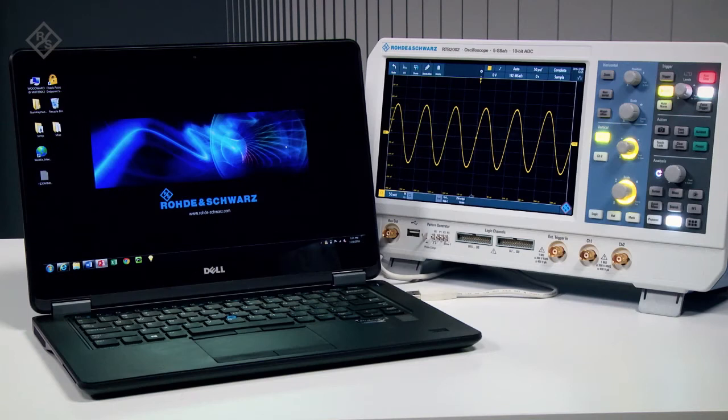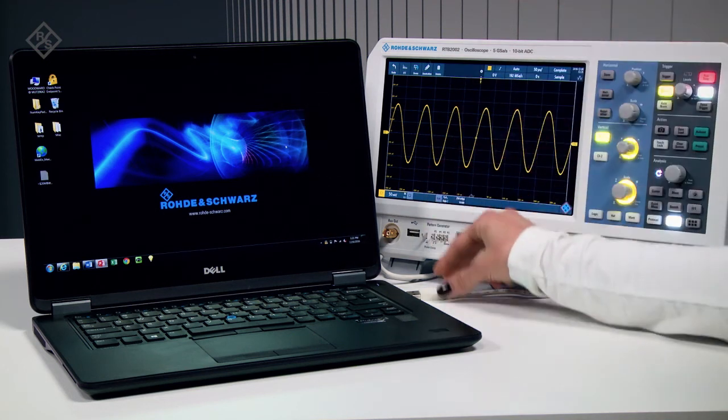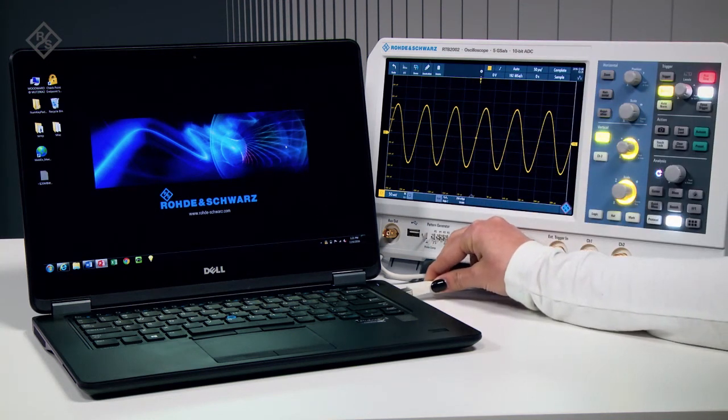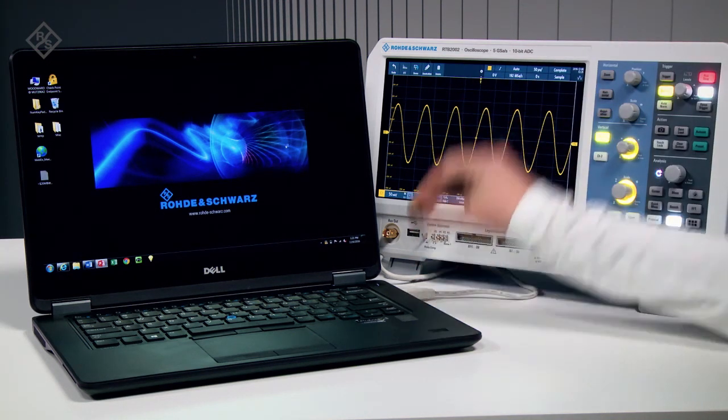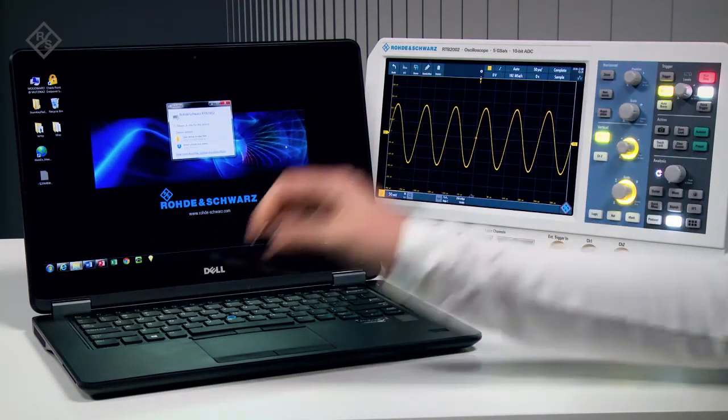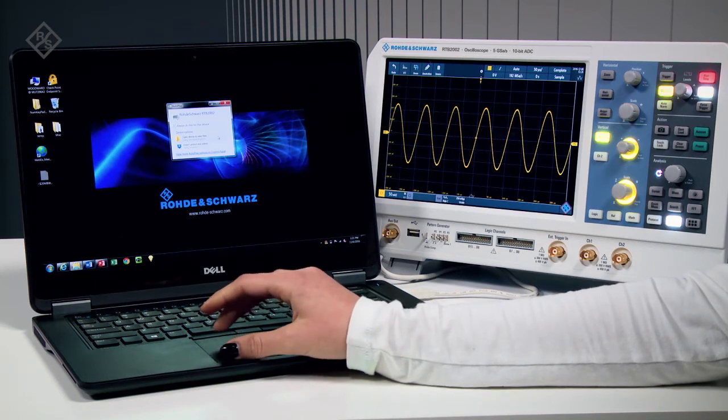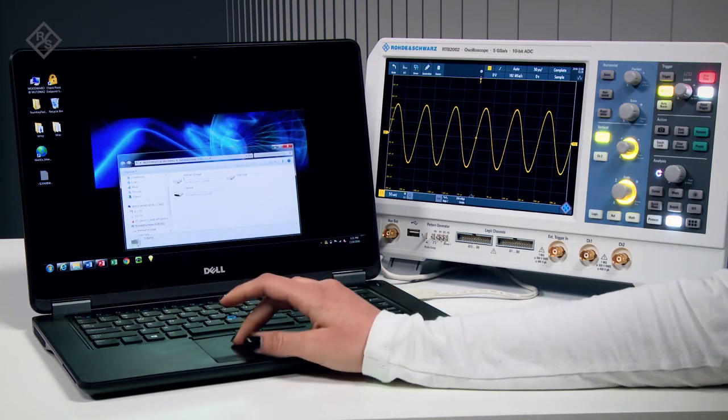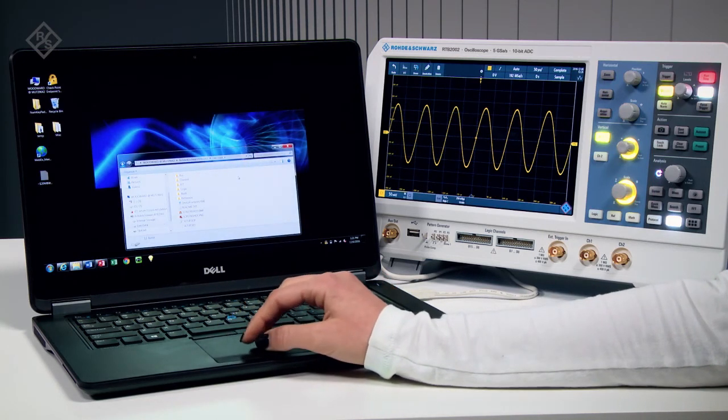With Rohde & Schwarz RTB 2000, RTM 3000 and RTA 4000 Series Oscilloscopes, use a USB cable to access setup and data files as well as screenshots. Simply connect the oscilloscope to your PC via USB. The instrument automatically shows up as a new drive. Instantly access the current screen image.